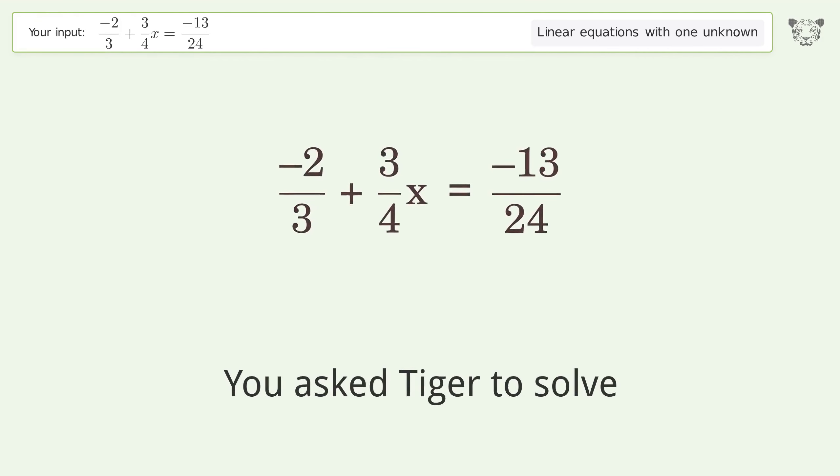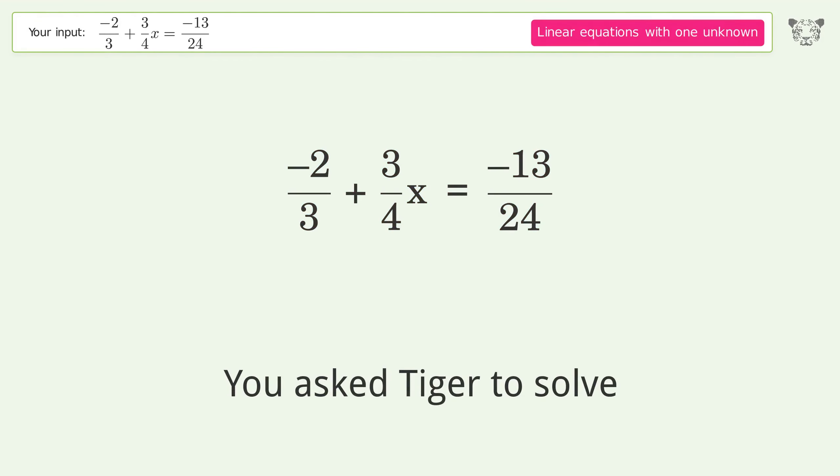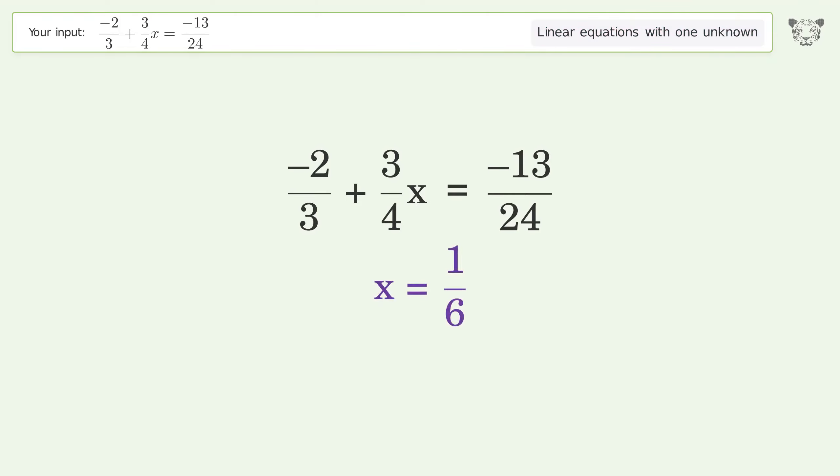You asked Tiger to solve this. It deals with linear equations with one unknown. The final result is x equals 1 over 6. Let's solve it step by step.